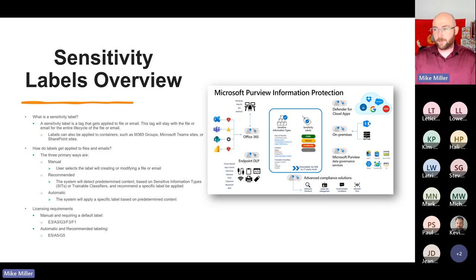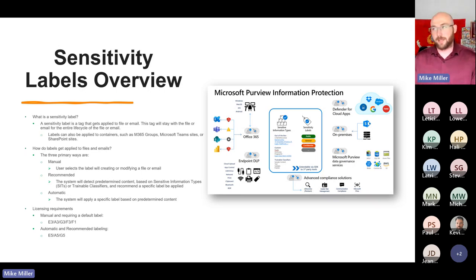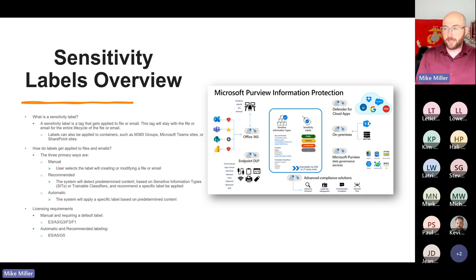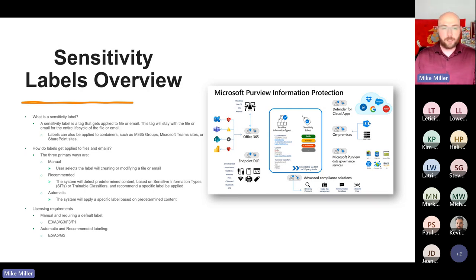You have three ways of applying labels to files and emails. The manual method is just selecting the label inside the application. Then there's recommended labeling, which is content detection based — configured within the label itself. You can say if it has one to ten social security numbers, recommend the confidential label gets applied. The user has the option to approve or deny that recommendation. And if you're tired of them denying your recommendations, you can turn on automatic labeling — if there's one to ten social security numbers, just apply the confidential label without recommending it.